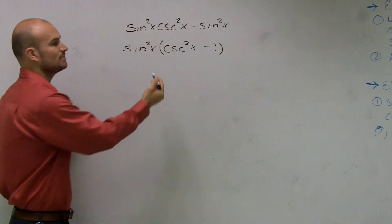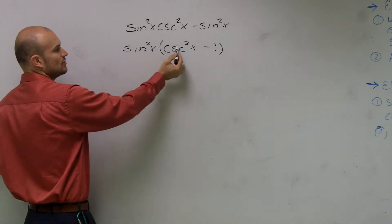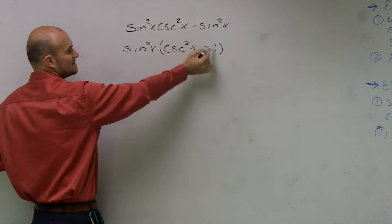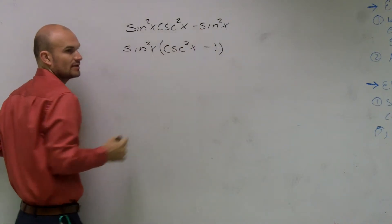Because remember, if I was going to multiply this back, sine squared times cosecant squared would be sine squared cosecant squared. Sine squared times negative 1 would give me negative sine squared. Make sense?